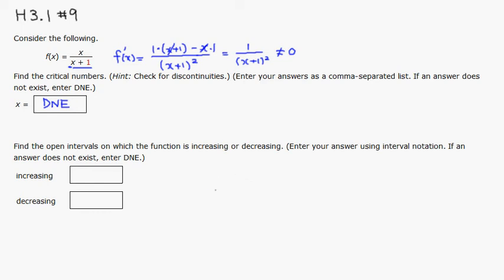Then let's look at the number line. Since it's not defined at x equals negative 1, I have to put that here.